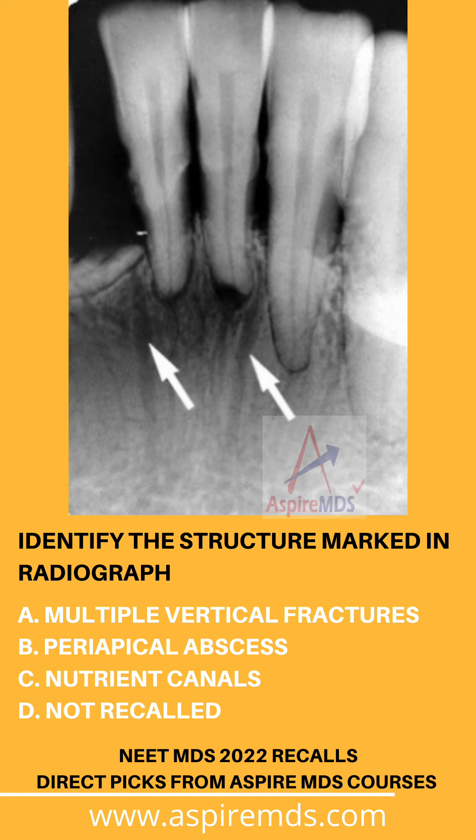Let's discuss some facts about nutrient canals that can be asked in further examinations. Nutrient canals are canals present within the bone that carry neurovascular bundles. They usually appear as radiolucent lines that are finely uniform throughout their width.